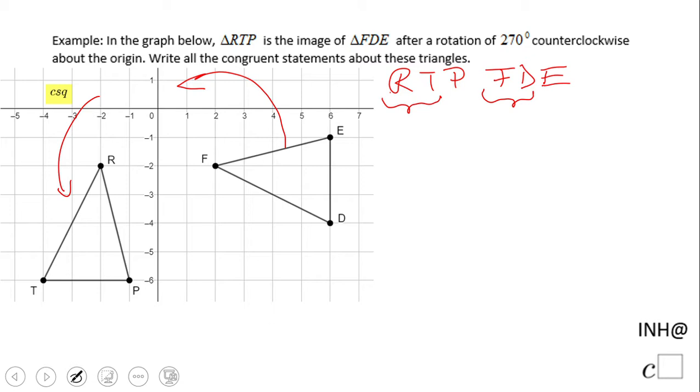RT congruent, that's one step. RP congruent with FE, right? Then TP congruent with DE. So be consistent in the way you choose the letters, and you should be fine.